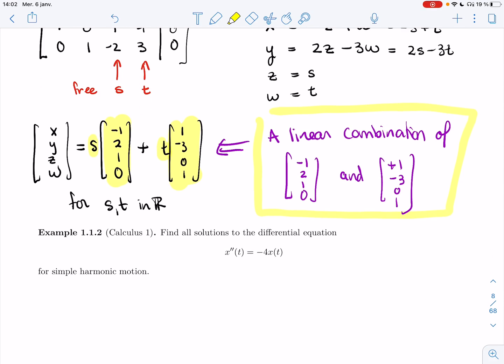Hopefully you remember this from Linear 1. Now, maybe you remember this from Cal 1. In example 1.1.2, we'll be looking at a differential equation for simple harmonic motion. We're asked to find all solutions to the differential equation x double prime of t equals minus 4x(t).